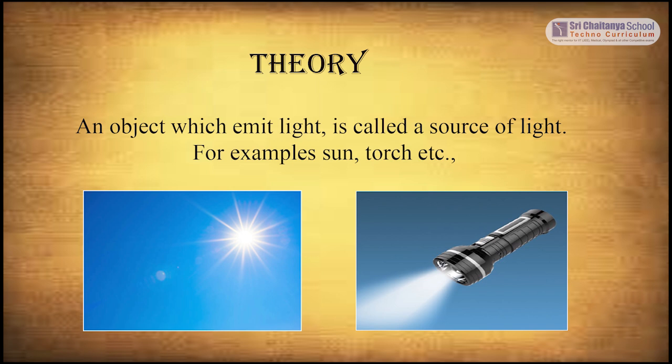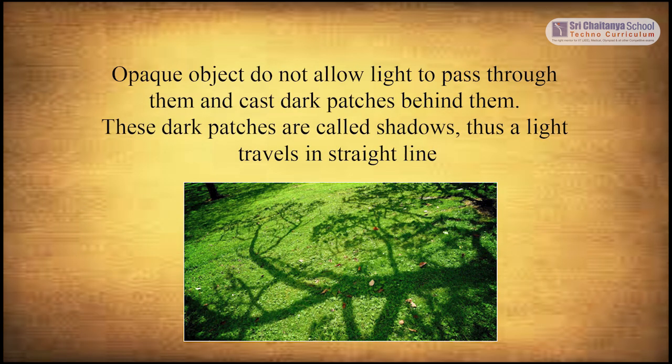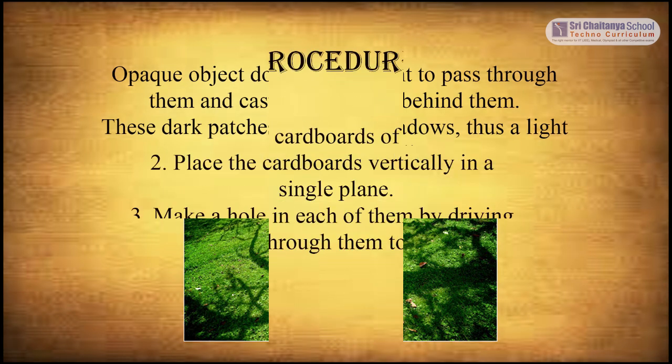The theory of this experiment is: an object which emits light is called a source of light. For example, the sun, a torch, and so on. Opaque objects do not allow light to pass through them and cast dark patches behind them. These dark patches are called shadows. Thus, light travels in a straight line.